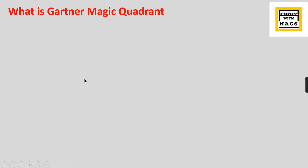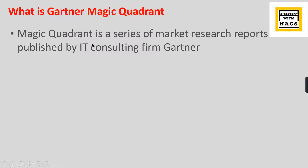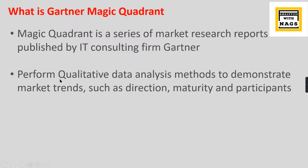A Magic Quadrant is a series of market research reports published by the IT consulting firm Gartner. They do a lot of research and publish reports on various technologies. They perform qualitative data analysis methods to demonstrate market trends such as direction, maturity, and participants, considering different parameters on how a technology and its providers are progressing, and then arrive at this Magic Quadrant.